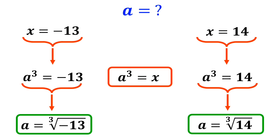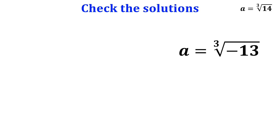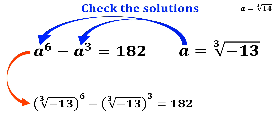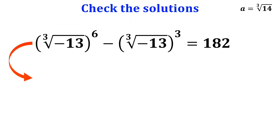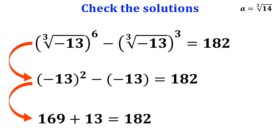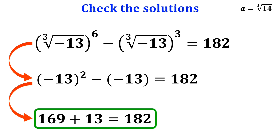Alright, let's check whether the solutions we found are correct or not. First, we check the cube root of negative 13. The original equation was a to the power of 6 minus a to the power of 3 equals 182. We substitute a with the cube root of negative 13, so we get the cube root of negative 13 to the power of 6, minus the cube root of negative 13 to the power of 3, equals 182. This simplifies to negative 13 squared minus negative 13, which equals 169 plus 13, which equals 182. That's correct — we have proved that the first solution is correct.